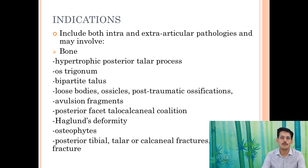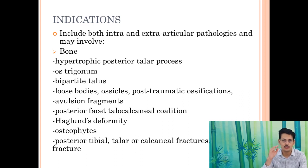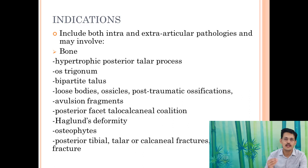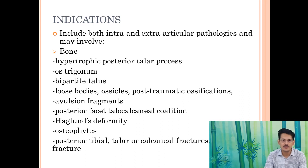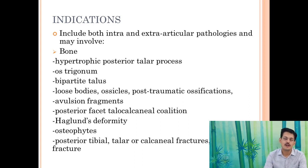How do you differentiate retrocalcaneal bursitis from posterior impingement? Retrocalcaneal bursitis is more commonly bilateral, located on both sides of the Achilles tendon, just posterior to it, with significant swelling. On X-ray, the normal fat shadow — Kager's triangle — is altered. On MRI, there is characteristic swelling in the retrocalcaneal bursa, which lies between the calcaneum and the Achilles tendon. This bursitis can result from overgrowth of the calcaneal spur, called Haglund's deformity. Endoscopic calcaneoplasty with resection of the retrocalcaneal bursa is the third dimension of posterior ankle arthroscopy.